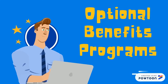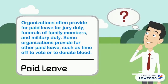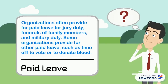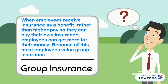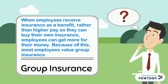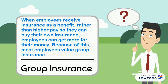Optional benefits include various kinds of insurance, retirement plans, and paid leave. Organizations often provide paid leave for jury duty, bereavement of family members, or military duty. Some organizations also provide other paid leave such as time off to vote or to donate blood. When employees receive group insurance as a benefit rather than higher pay, they can buy more for their money, so most employees value group insurance.